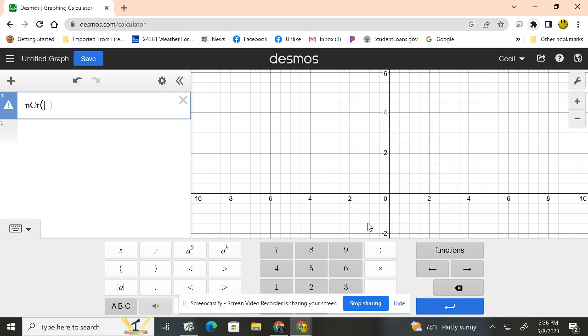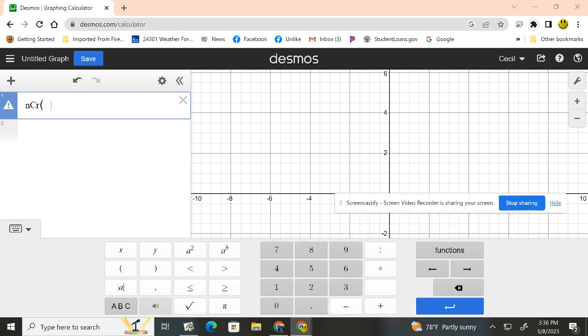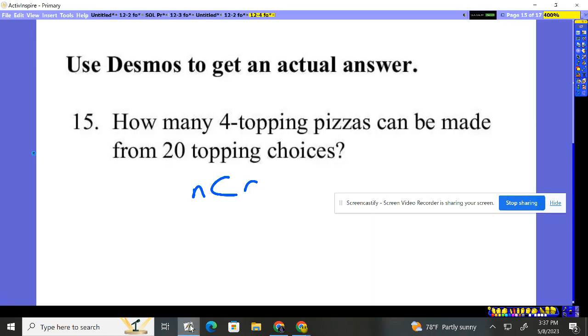We had 20 toppings picking four. So let me move this out of the way. Let's type in 20. Oops, we're outside of the parentheses. Okay, parentheses 20 comma 4. This is, hey, there's 4,845. So we have 4,845 possibilities for that.